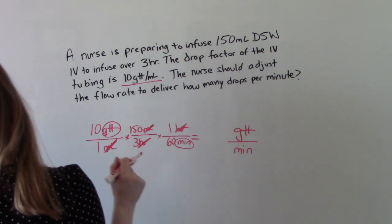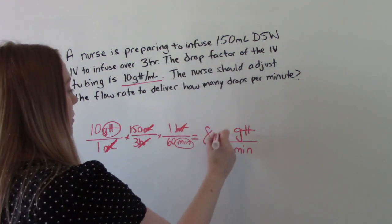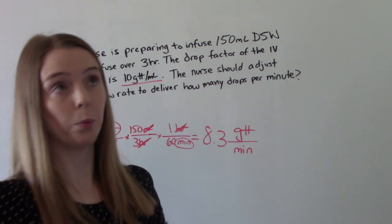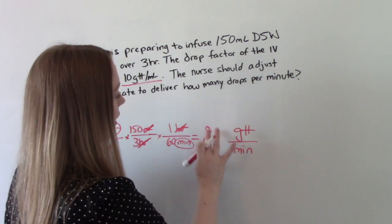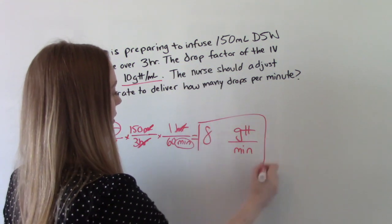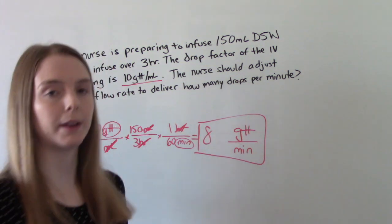Punch it into your calculator. Do the math and you get 8.3. But again we can't give .3 of a drop. Right? So this is going to round. And so our answer is 8 drops per minute.